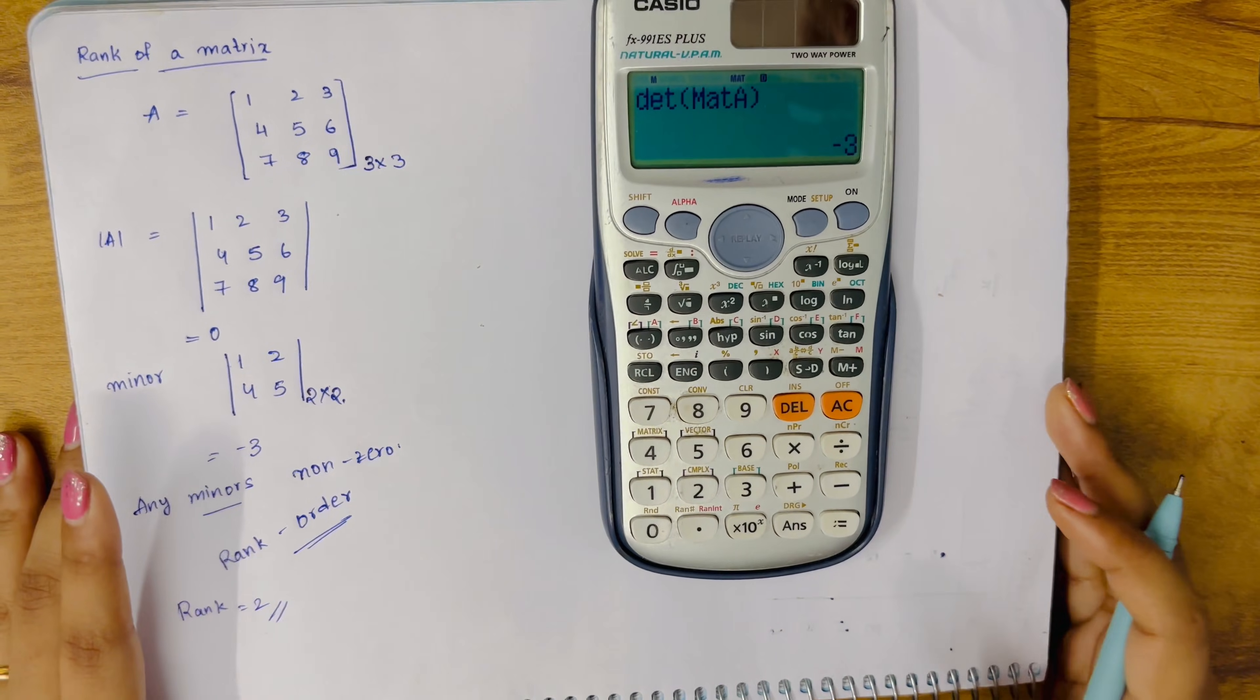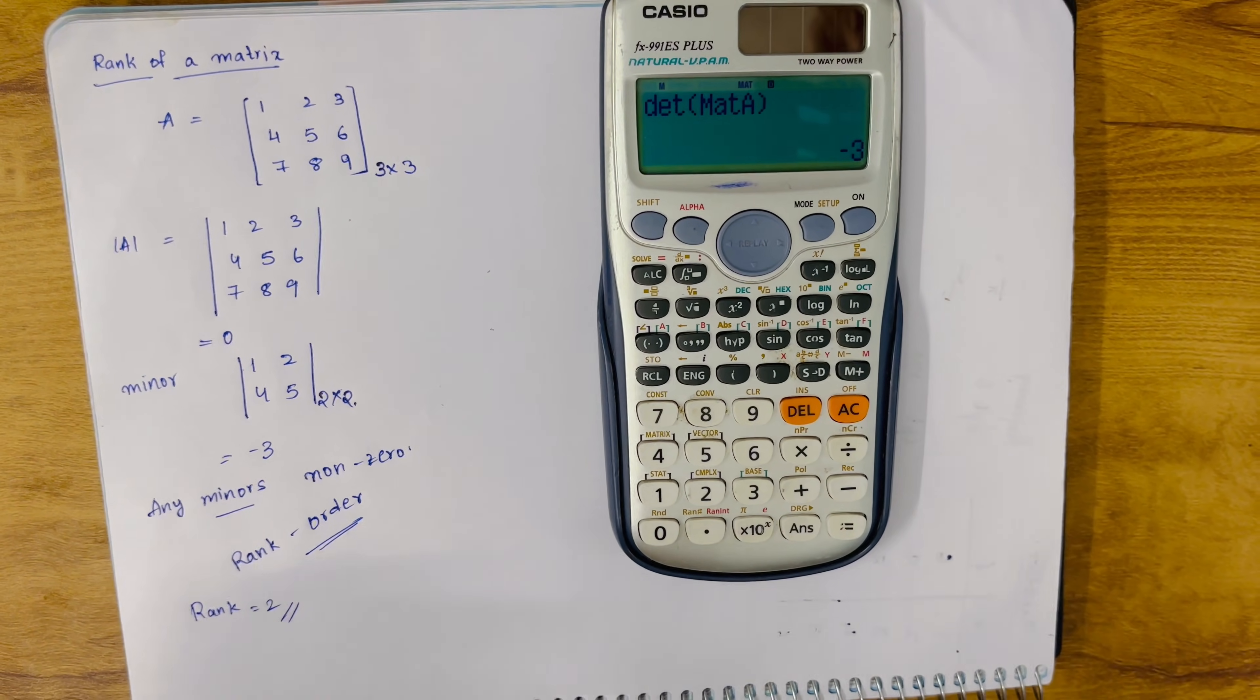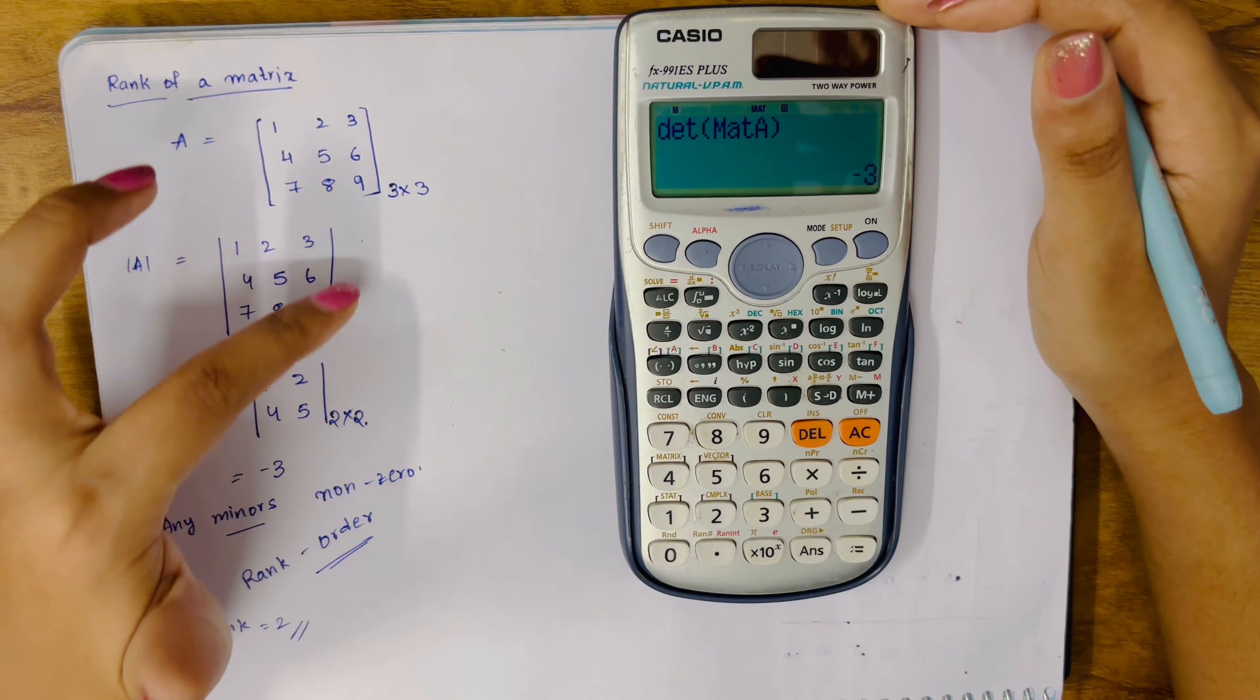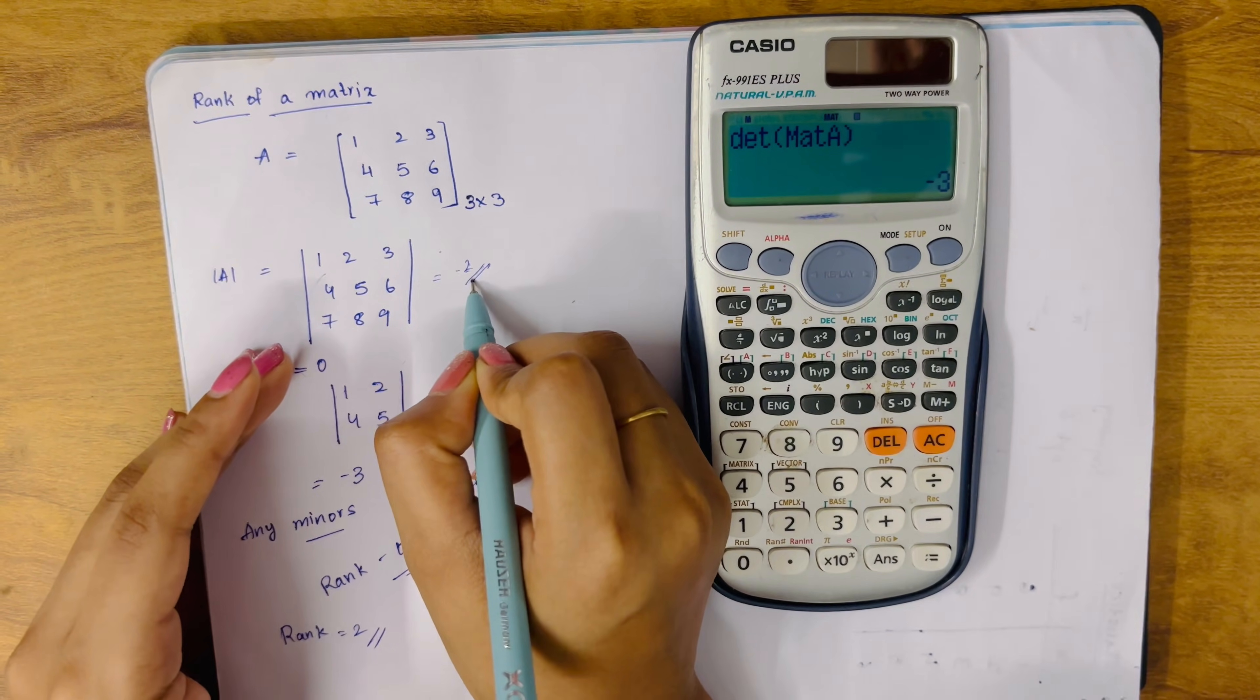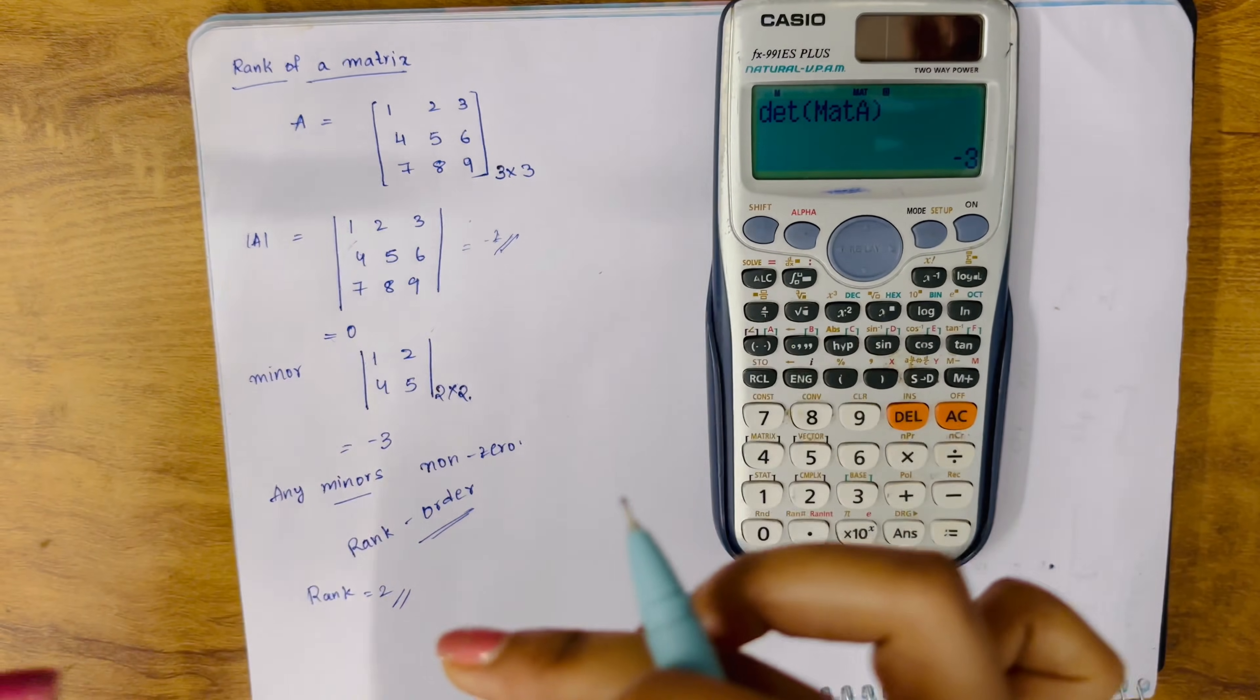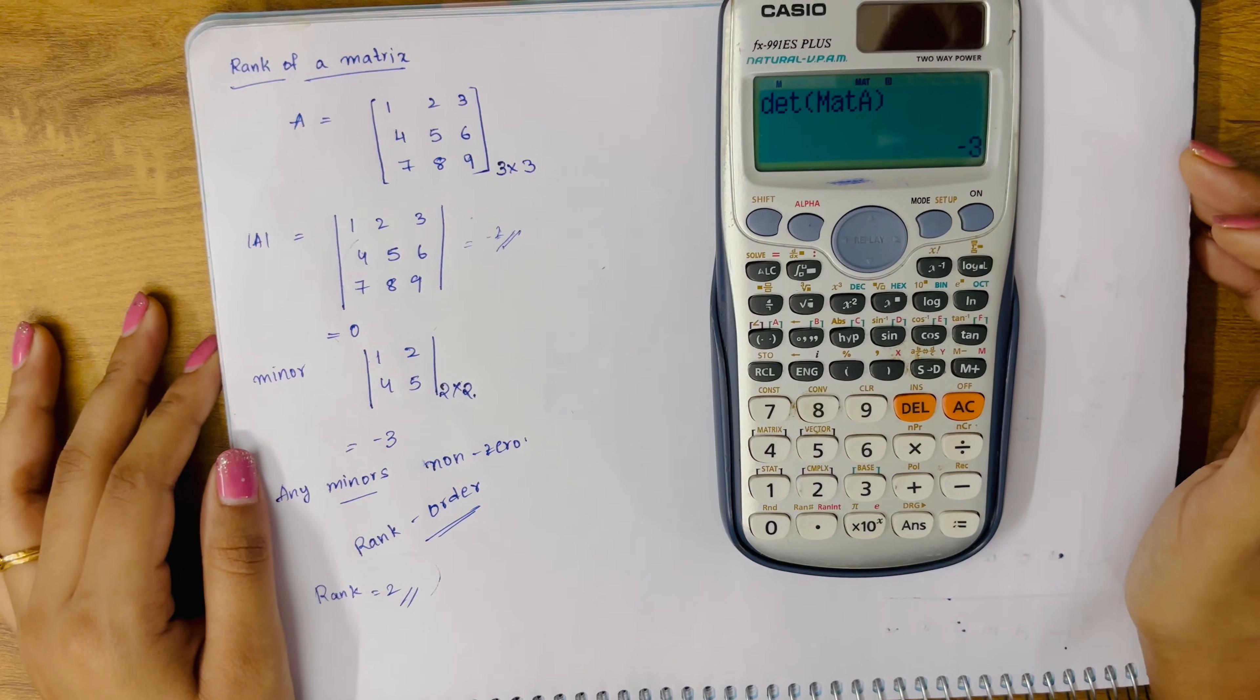Any one of the minors, whatever you find, that becomes the rank. If in case here we found a non-zero value—suppose we got the answer as minus 2, just an example—then the rank becomes 3. But we didn't get it, so we went for the minor. So the rank is 2. All right guys, thank you for watching. Have a nice day.